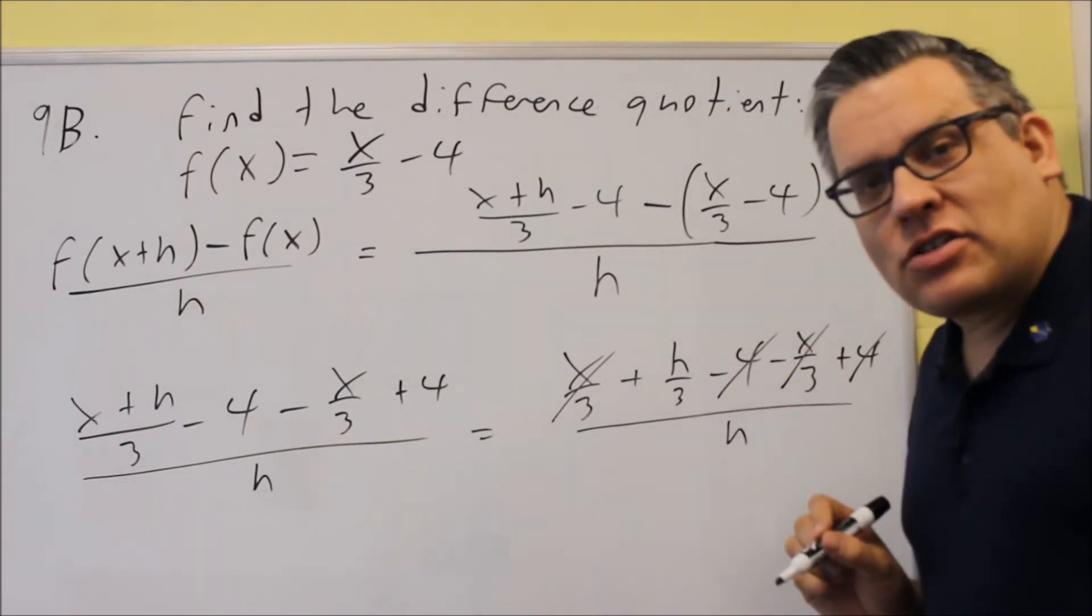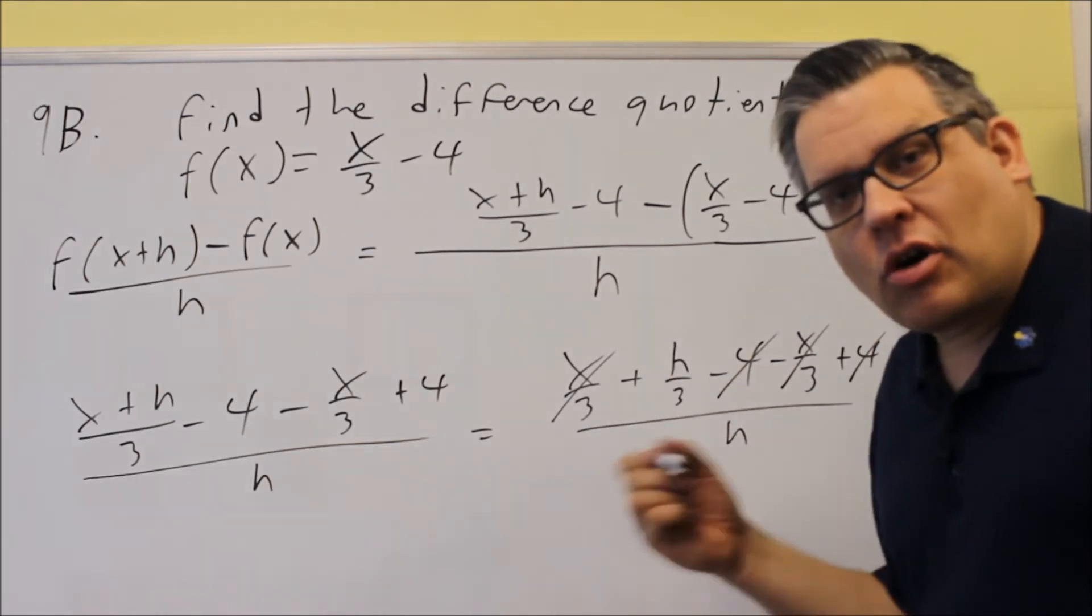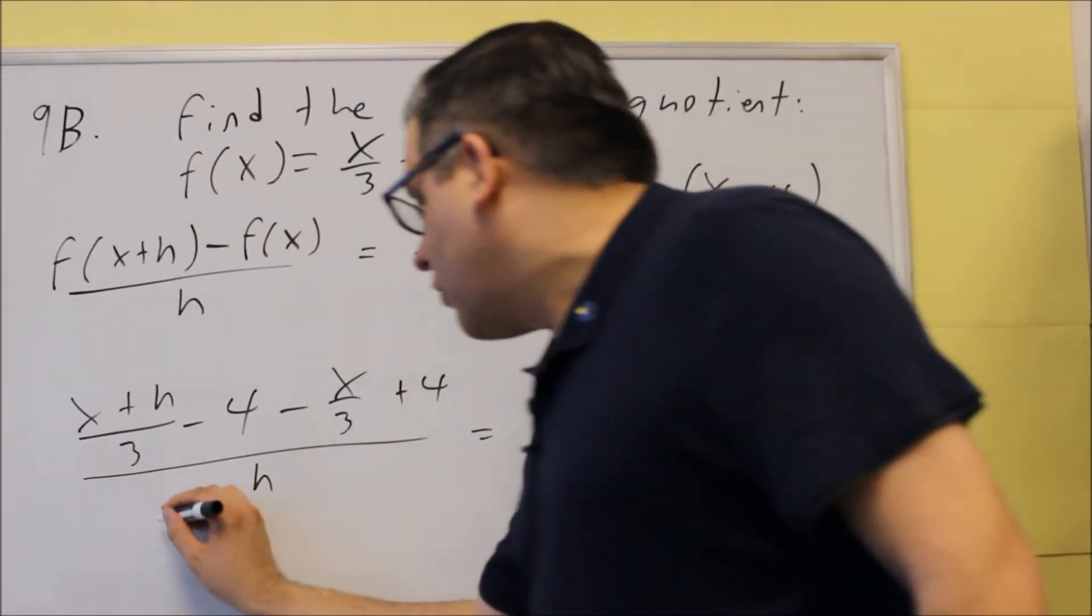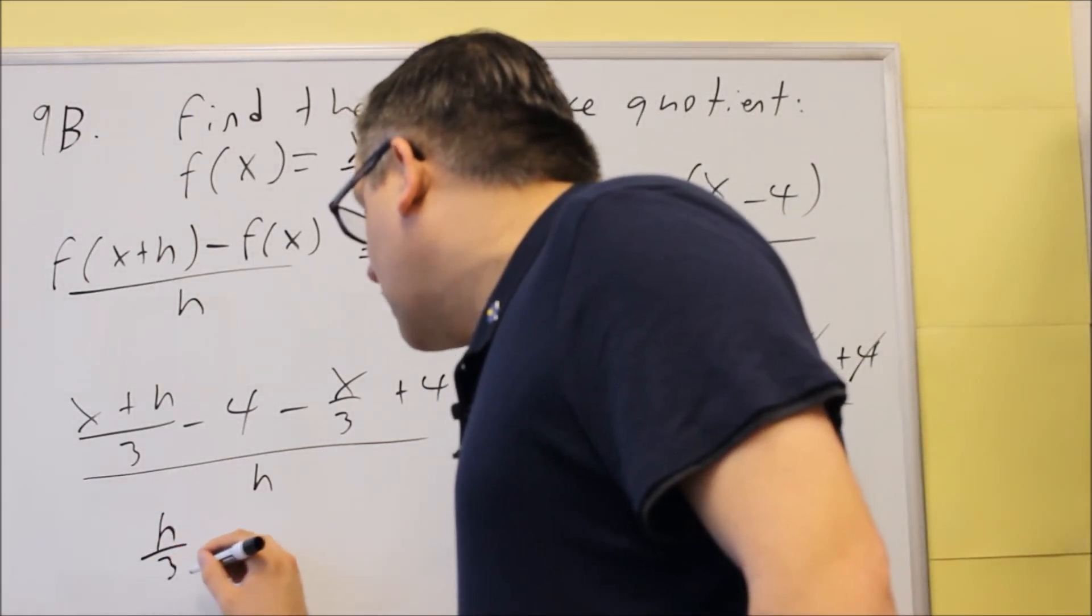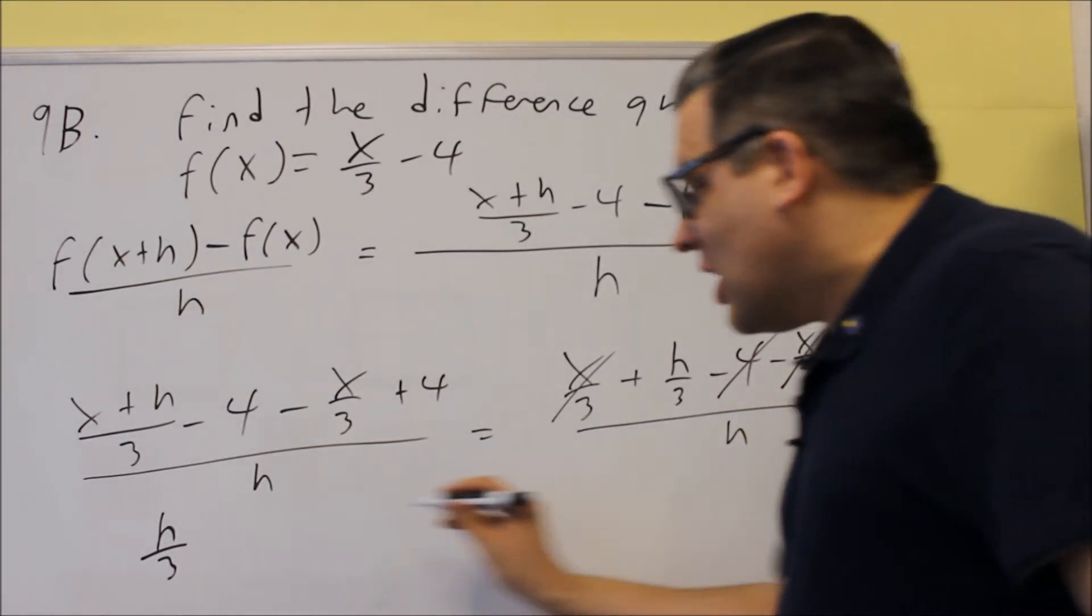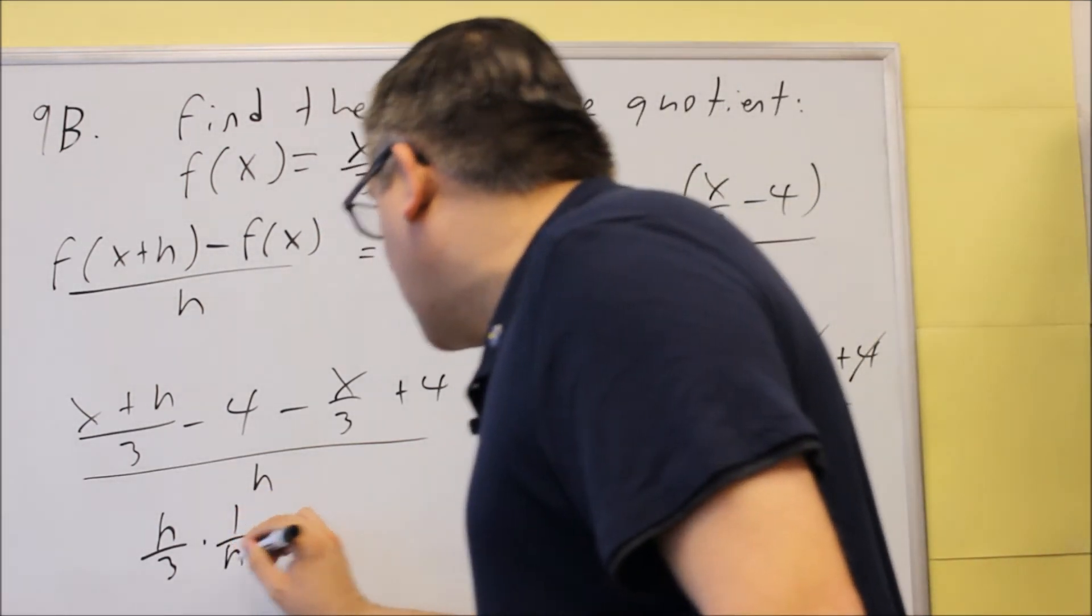If you can't cancel the h out, that means you did something wrong. So, all the ones, you should be able to cancel the h out on the bottom. So, here's what we have left. We have h over 3 and we're dividing this by h. Now, if I divide by h, it's the same thing as multiplying by the reciprocal.